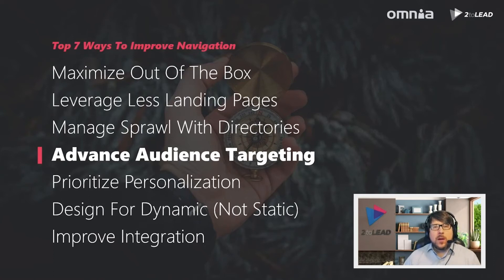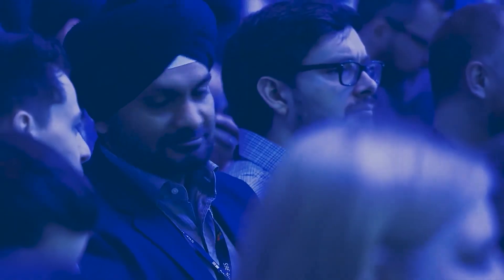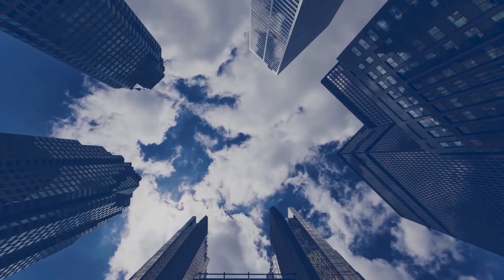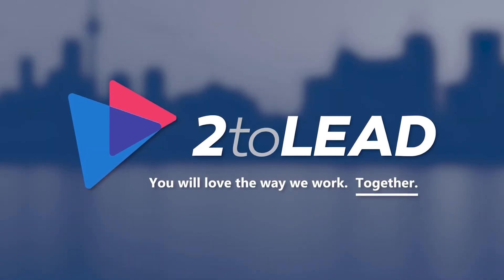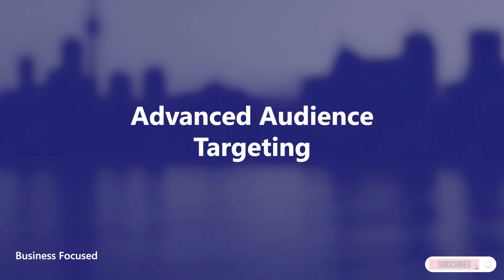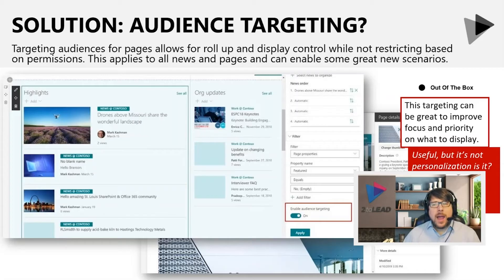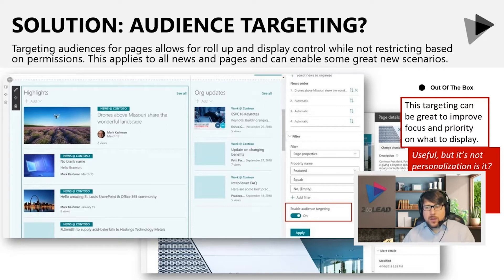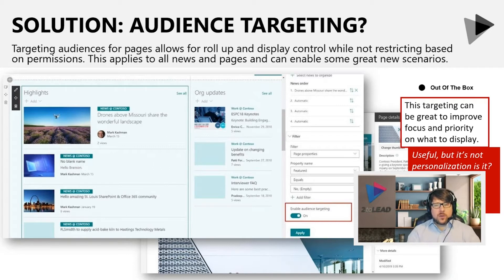In audience targeting, what we want to do is improve the experience for end users. Out of the box, Microsoft has embraced audience targeting. If you look at out-of-the-box web parts like news or the out-of-the-box navigation, both support audience targeting. Pages and content can have audiences applied to them. You define those audiences, apply them to pages and content, and when you enable the filtering, it will auto-filter those controls for those audiences.